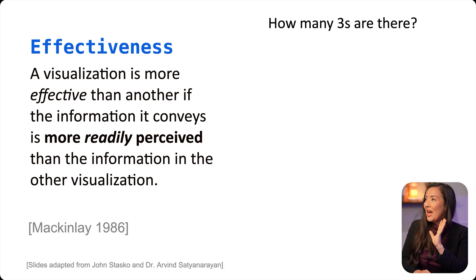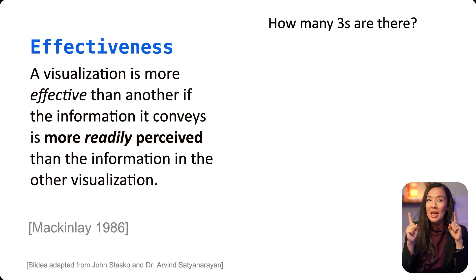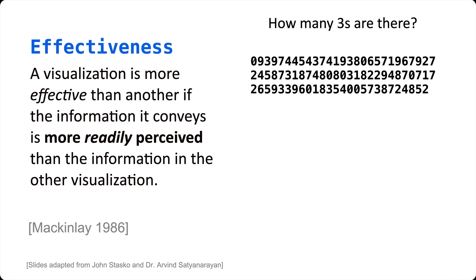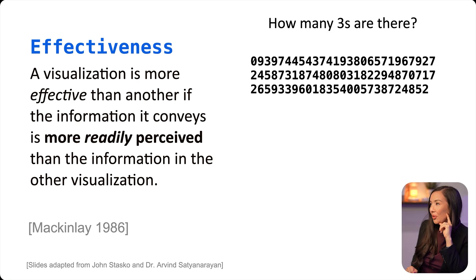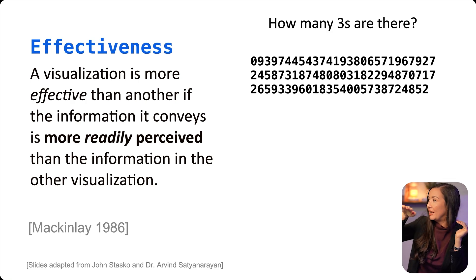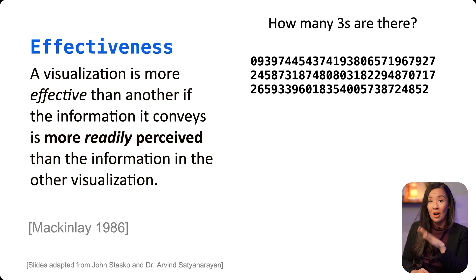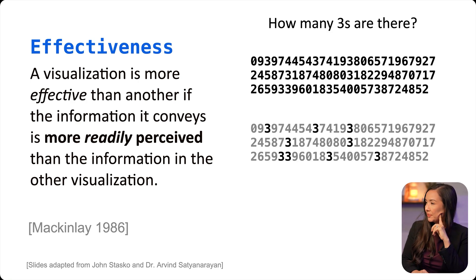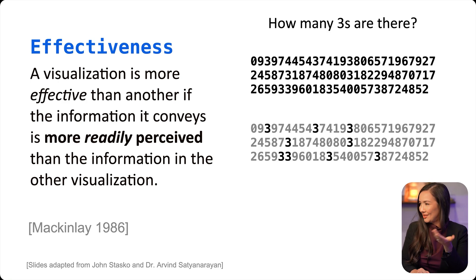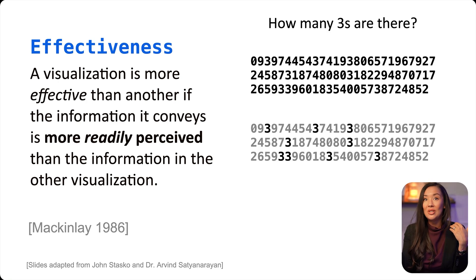Let's do another example. I'm going to show you a set of numbers and I want you to answer how many threes there are, as quickly as possible, while thinking about how hard it is to do. You're probably doing what's called a serial search — scanning line by line. Now compare that to this version, where you can see the threes pop out and you can just count them: nine threes. You can count them because they are more readily perceivable when displayed this way.